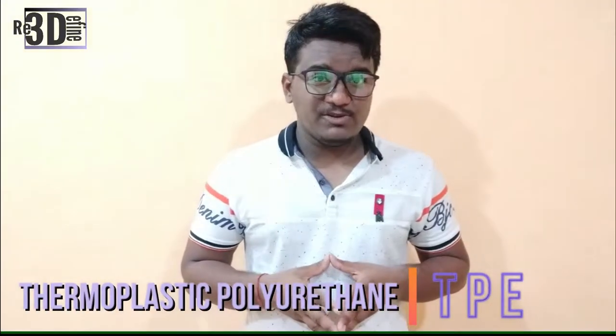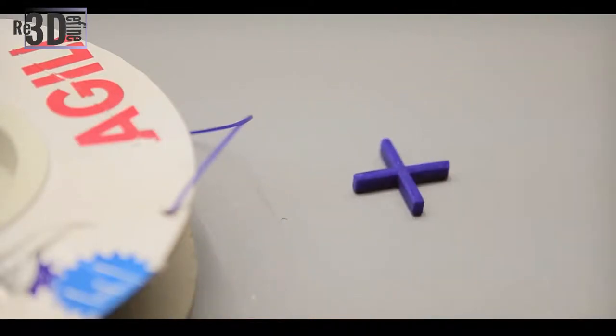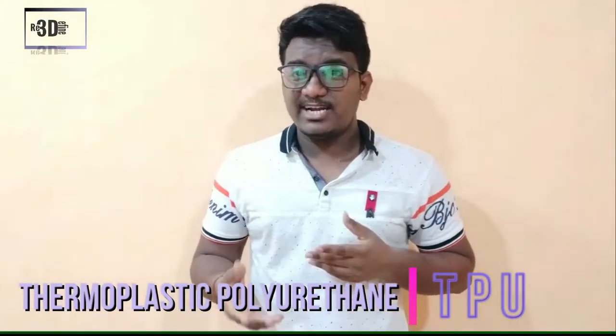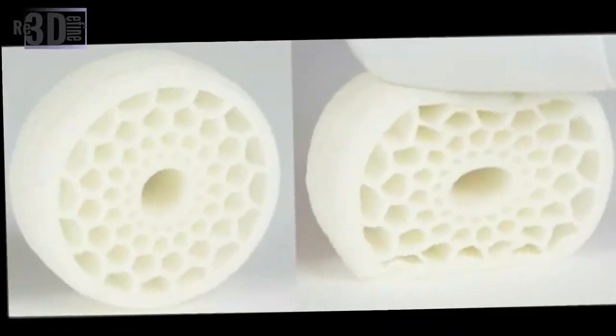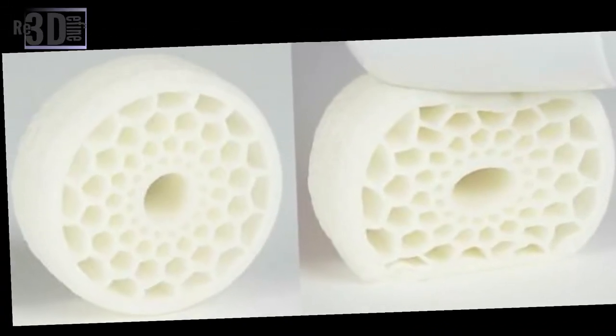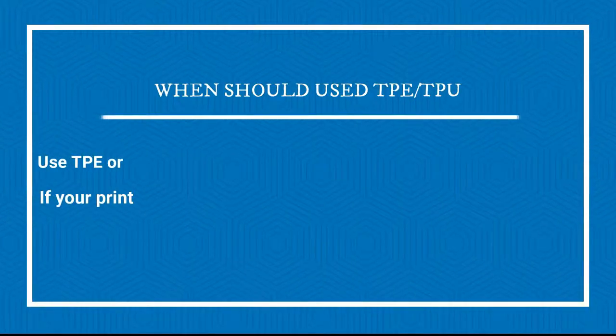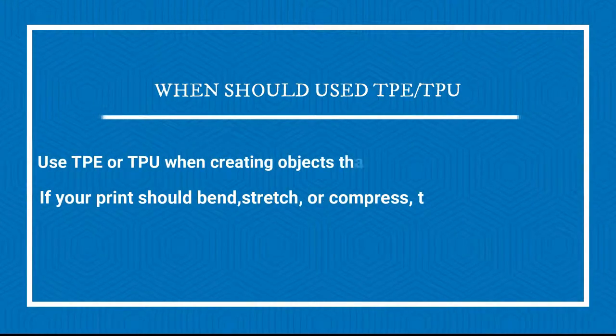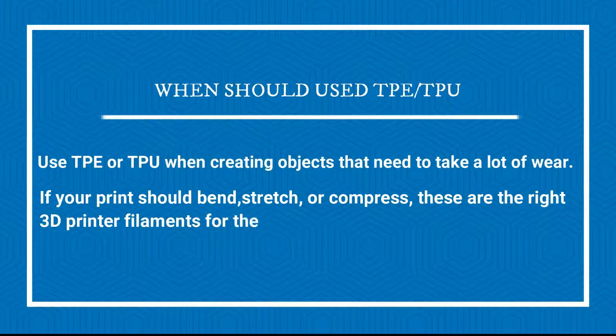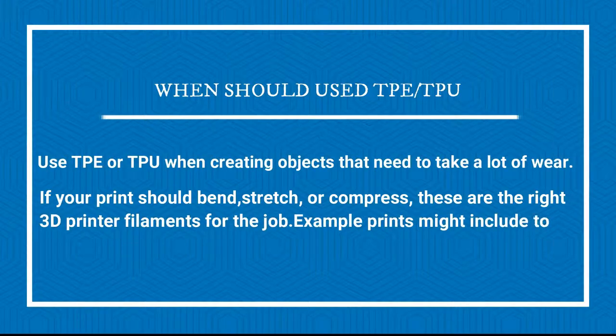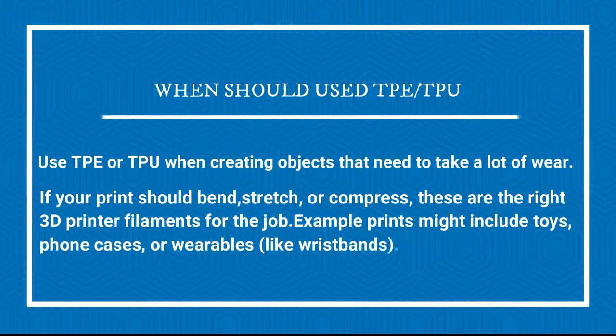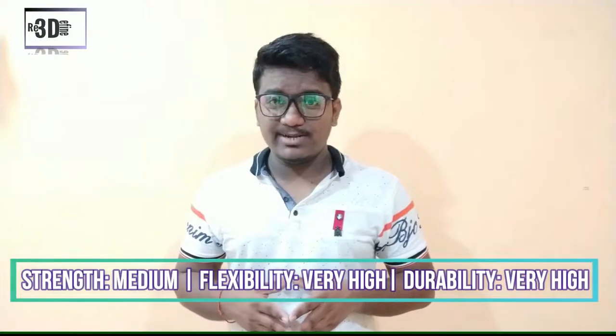The fourth filament in the common category is TPU or TPE. Thermoplastic polyurethane are essentially plastics with rubber-like qualities, making them extremely flexible and durable. TPE is commonly found in automotive parts, household appliances and medical supplies. Thermoplastic polyurethane (TPU) is a popular variety of TPE and is slightly more rigid, making it easier to print. It is also more durable and can better retain its elasticity in the cold. TPU or TPE is used when the object needs to take a lot of wear — if a print needs to bend, stretch or compress. Example prints include toys, phone cases, or wearables. It has medium strength with very high flexibility and durability.